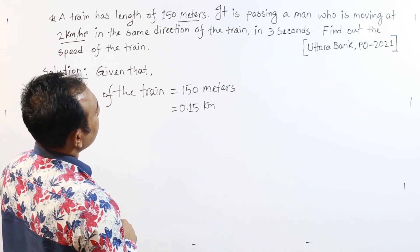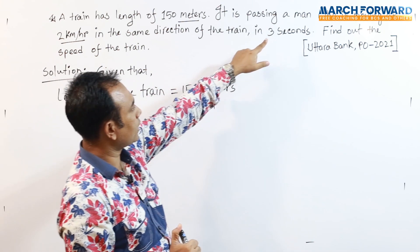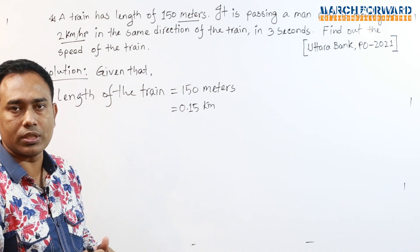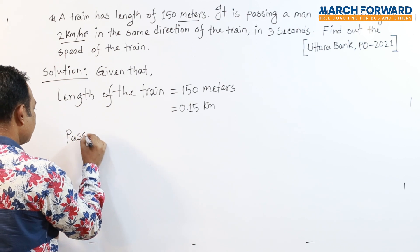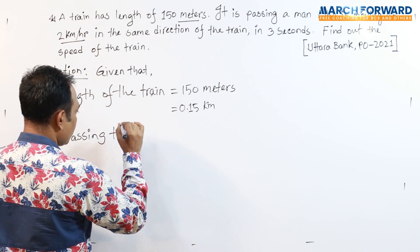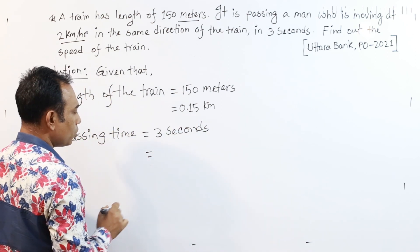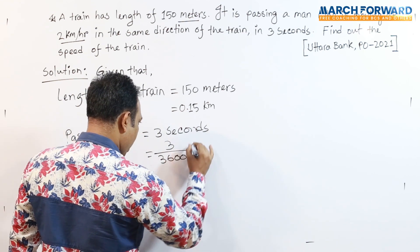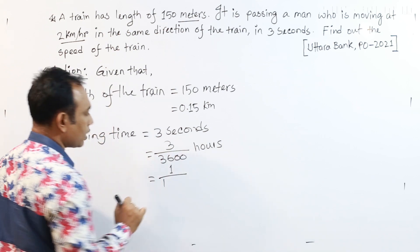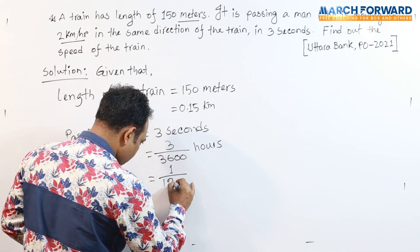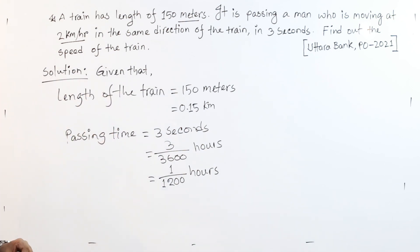The train passed by a man who is moving at 2 km in the same direction. And how many seconds? 3 seconds to pass. So passing time equals 3 seconds. We have 3 divided by 8, so this is the 30th hour, we have 3, and now we have 3.5.